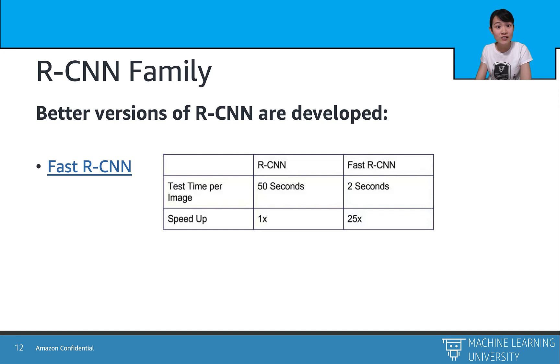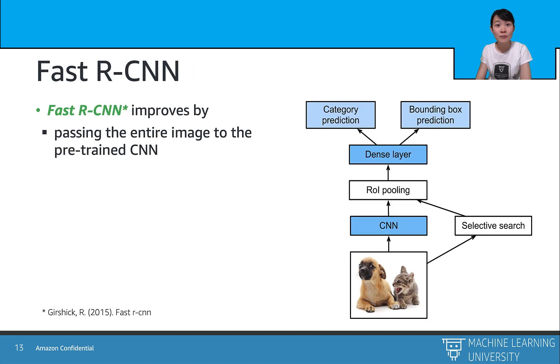However, the upgraded version got 25 times speed up with only 2 second inference per image. Well, the Fast R-CNN is by the same author as R-CNN, as it has several innovations upon R-CNN. So first is that the Fast R-CNN passes the entire image to the pre-trained CNN. To be more specific, rather than cropping out the pixels on the image.